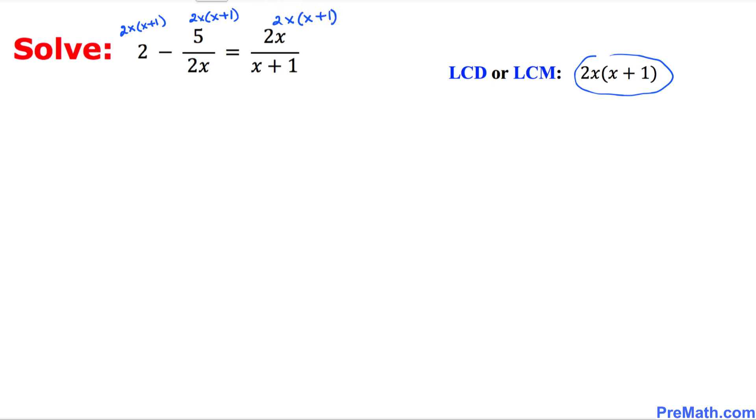Now we multiply this whole thing - 2 times 2x times x plus 1 gives us 4x times x plus 1. Now let's look at this fraction - this 2x and this 2x cancel out. So we simply end up with negative 5 times x plus 1.